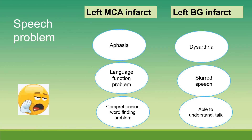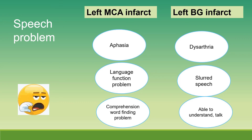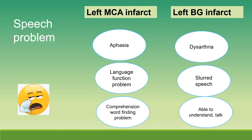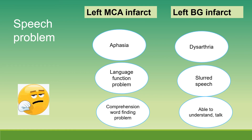Left MCA infarct causes aphasia, while left basal ganglia infarct causes dysarthria. Aphasia is a language function problem involving comprehension and word-finding difficulty. For left basal ganglia infarct, the patient would have slurred speech but is able to understand and talk.